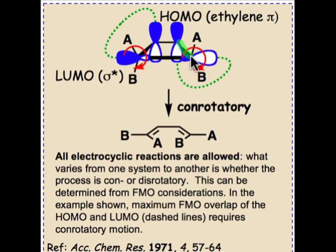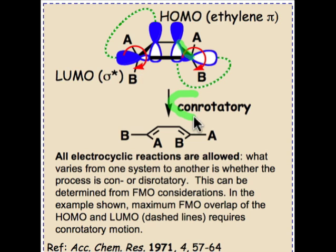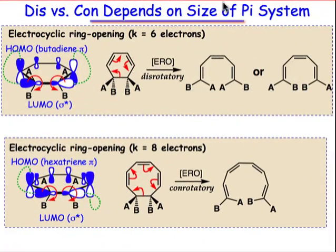Rotating about that bond will take this lobe and twist it down so that there'll be a π-type interaction developing between the HOMO and the LUMO. Since both of these twist in the same direction, we're led to the conclusion that this 4π electrocyclic ring-opening process goes by the conrotatory pathway. Whether an electrocyclic ring-opening reaction goes by the con or disrotatory pathway is going to depend on the size of the π system.